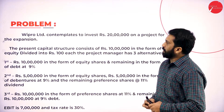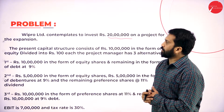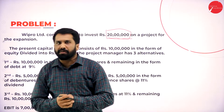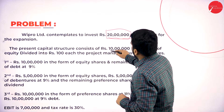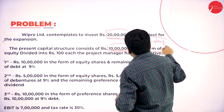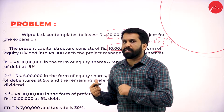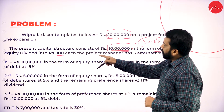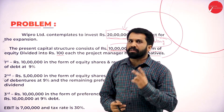Now your problems are very simple. Wipro Limited contemplates to invest rupees 20 lakh on a project for the expansion. So how much they want to invest? 20 lakh. Your complete problem is based on 20 lakh. The present capital structure consists of 10 lakh in the form — there is an existing one. Existing, we do only for total number of equities, equities divided into 100 rupees each. 10 lakh already you have of 100 rupees each. We have 3 alternatives to get this 20 lakh.